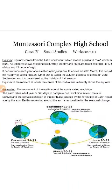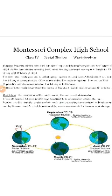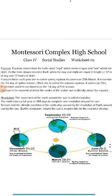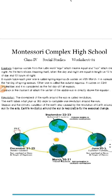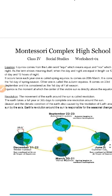The movement of the earth around the sun is called revolution. There is a difference — the movement the earth makes on its own axis is called spinning, and the movement the earth makes around the sun is called revolution. Just as equator and axis are different, spinning and revolution are different. The earth takes a full year or 365 days to complete one revolution around the sun.